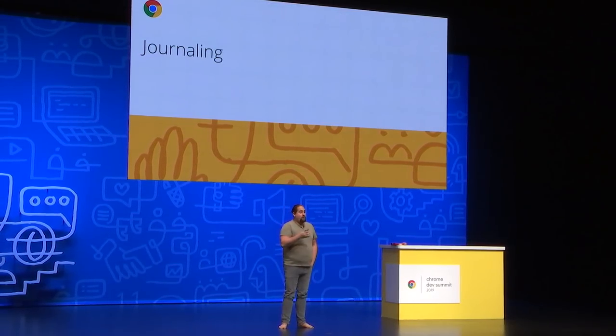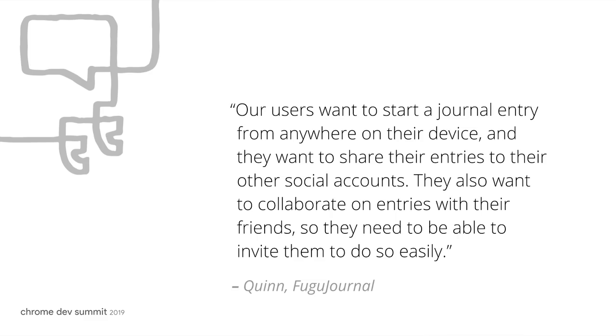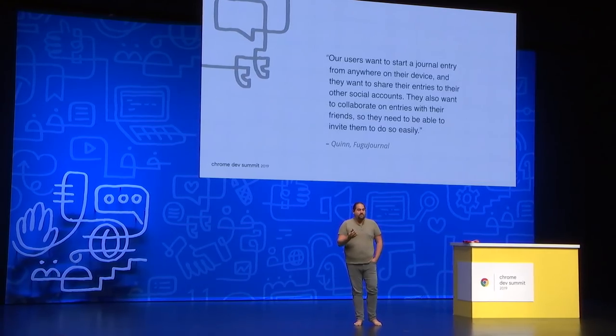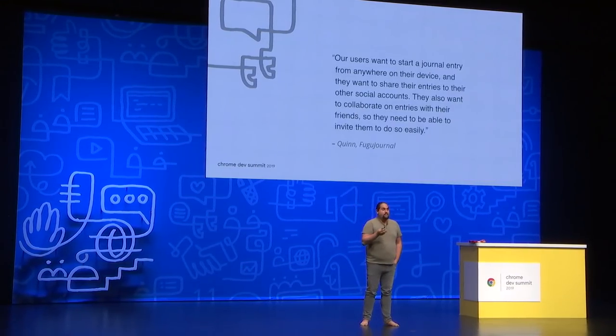Social apps on mobile devices have been hard because they need to be tightly integrated to be loved by their users. Consider an app like a journal: users want to start a journal entry from anywhere on their device and share those entries to other social accounts. They also want to collaborate on entries with friends, so they need to invite them easily. Until recently, these capabilities would rule out building a web app — they simply didn't exist. But with WebShare, WebShareTarget v2, and the Contacts API, that calculus has changed, and developers can build a progressive web app instead of a native app.